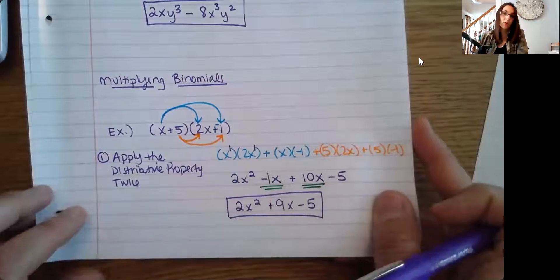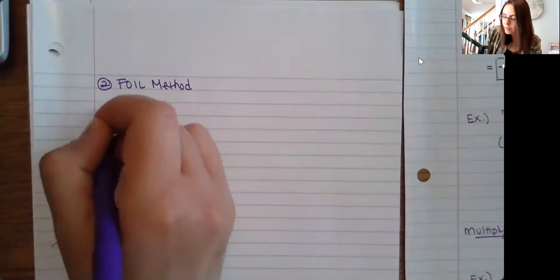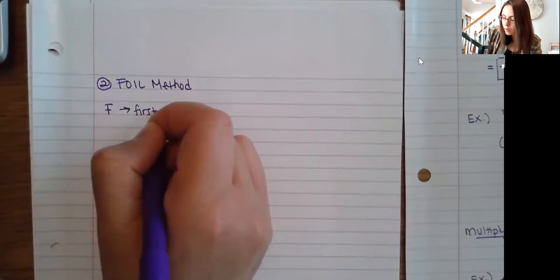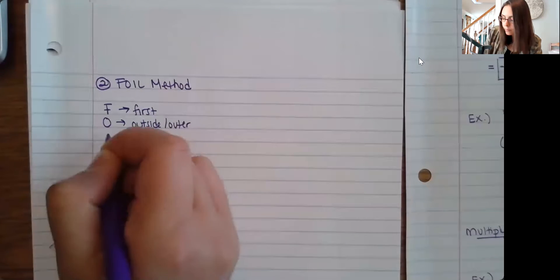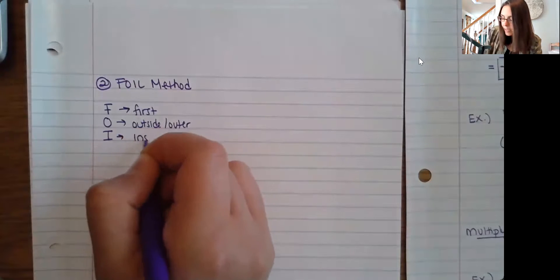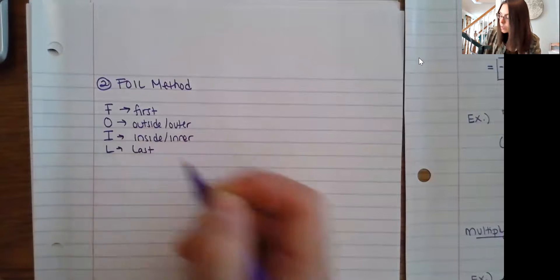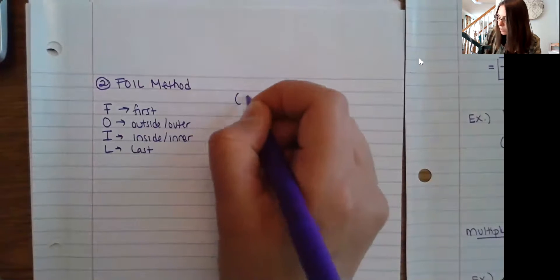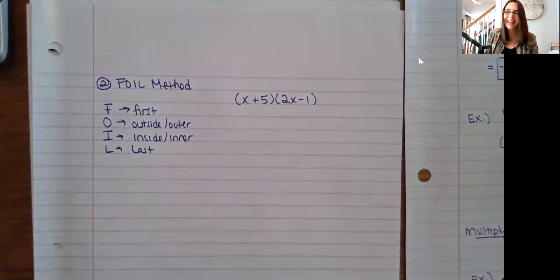That's the first strategy — just distribute twice. Now the second strategy is called the FOIL method, and FOIL is an acronym. F stands for First, O stands for Outside or Outer, I stands for Inside or Inner, and L stands for Last. I'm going to rewrite the same problem and show you how to use the FOIL method, and you'll see you get the same exact calculations — it's just a different way to think of it.